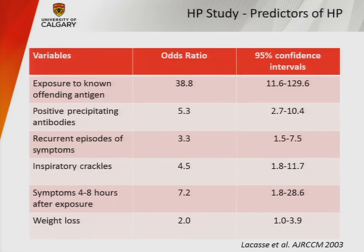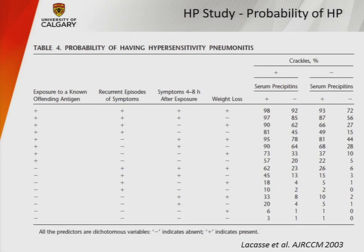Individual predictors showed that exposure to an offending antigen had an odds ratio of about 40 — very important. Positive precipitating antibodies were also highly important, along with recurrent episodes of symptoms, inspiratory crackles, symptoms four to eight hours after exposure, and weight loss. When combined, if you have crackles, positive serum precipitins, and all those factors positive, there's a 98% probability you have HP.